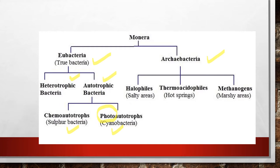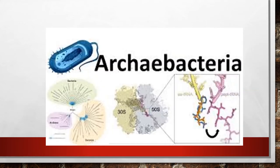Archibacteria is classified under three categories based on its habitat. One is halophiles, which survive in salty areas. The second is thermoacidophiles, found in areas with high temperature such as hot springs. The third is methanogens, in which there is a liberation or release of methane gas, seen in marshy areas.